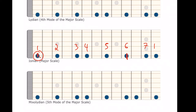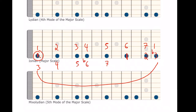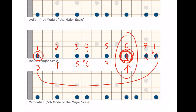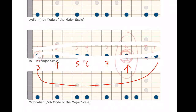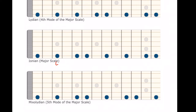A relative mode keeps the same notes on the fretboard and just moves the numbers. If you call six 'one,' you get the natural minor scale — that's the sixth mode of the major scale. I'm going to encourage you instead to understand the modes in a parallel way, thinking of each mode totally as its own structure, its own unique sound, and its own scale.